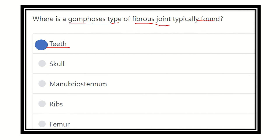The gomphosis type of fibrous joint is only present in the tooth. There are different types of fibrous joints, but the gomphosis type is exclusively found in the tooth. On the other hand, the skull, manubrium, ribs, and femur — they are not that type of joint. Thank you all.